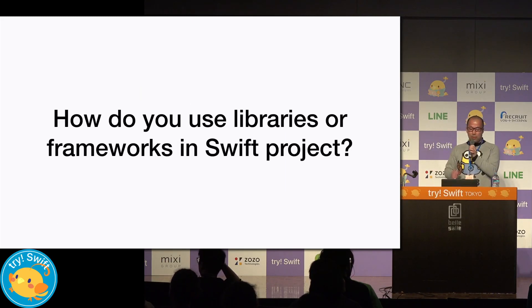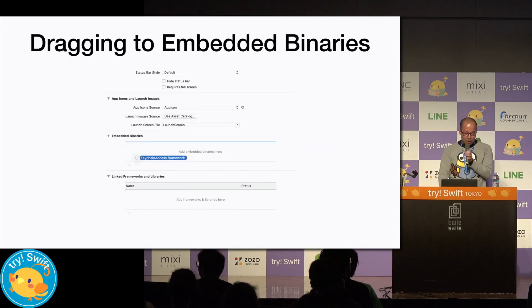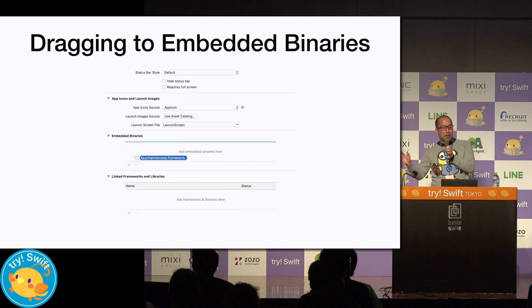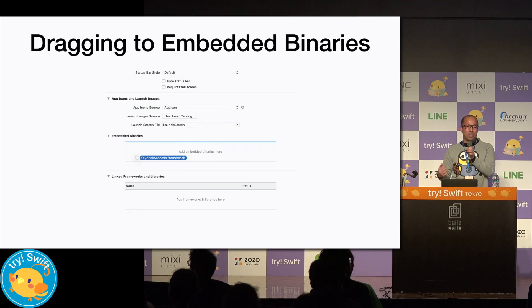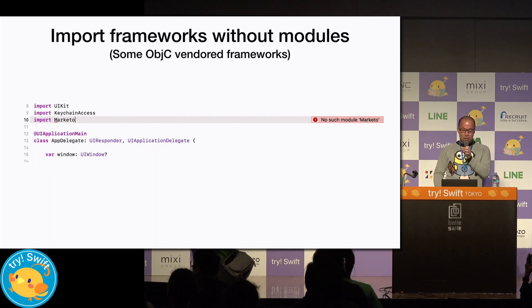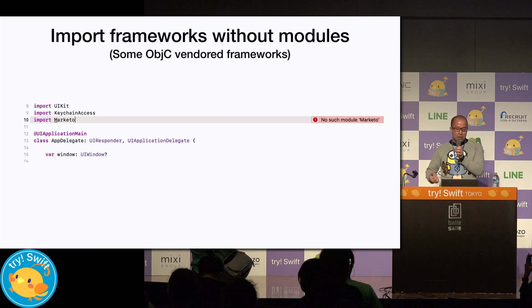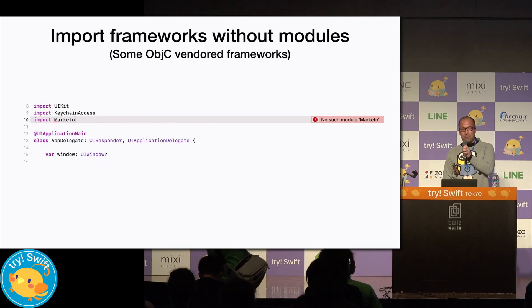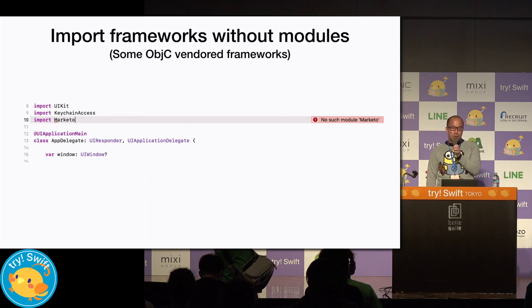How do you use libraries and frameworks in a Swift project? Just drag the framework to the embedded section. That's it — is it true? No. Some frameworks can't be used within the same operation. Most problems with linking are related to various factors. To solve the problems, it is necessary to understand what is happening while linking.